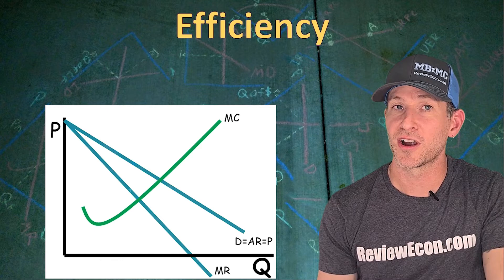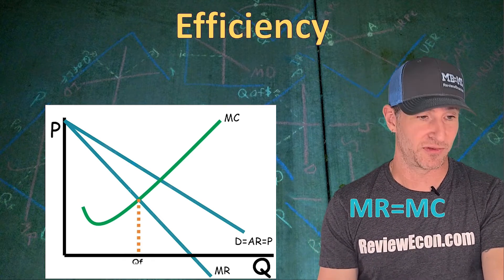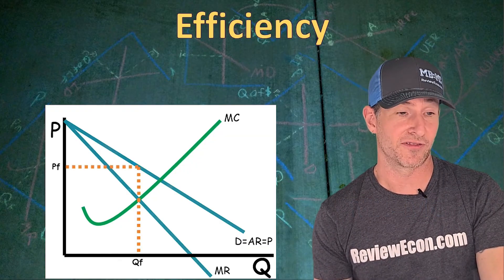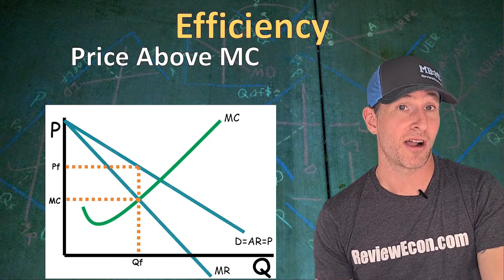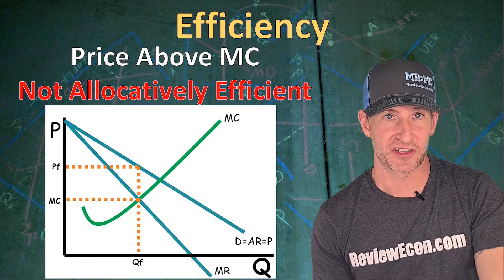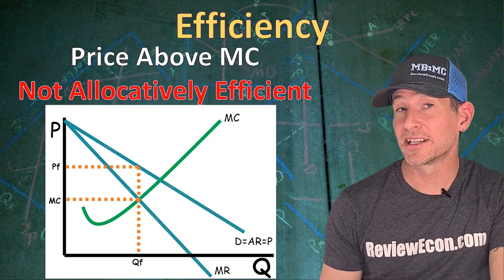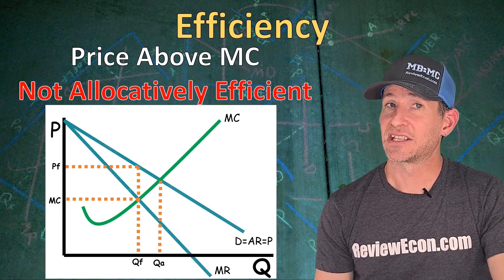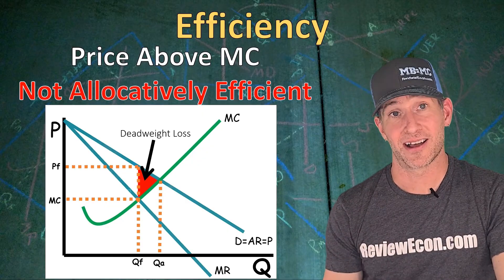Just like with perfectly competitive firms, an imperfectly competitive firm is going to produce where MR equals MC. Here, though, they're going to price up at the demand curve. Since the price is above the marginal cost at this profit-maximizing quantity, this firm is not allocatively efficient — they are underproducing and overcharging. The allocatively efficient quantity is where the marginal cost intersects the demand curve. Since we aren't producing the allocatively efficient quantity, we have deadweight loss.